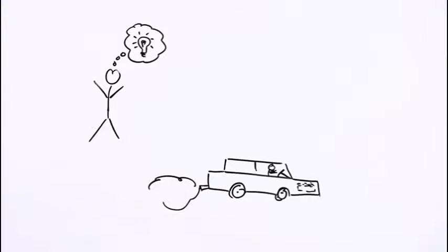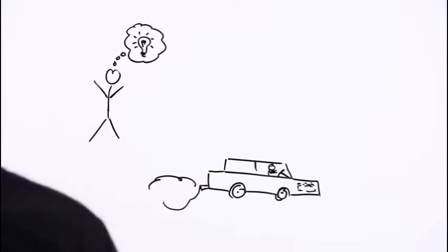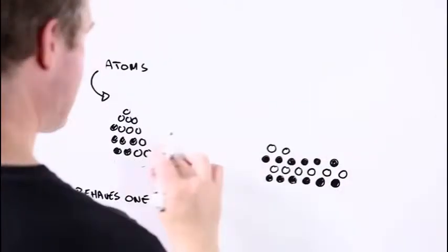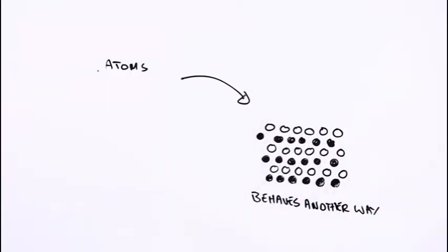Of course, atoms are a bit smaller than the wheels on a car, but the same idea holds. How the different atoms in something are arranged can affect things like how strong or how weak it is, or if it conducts electricity, or if you can see through it, or even what it feels like.